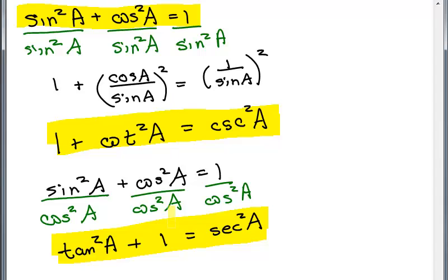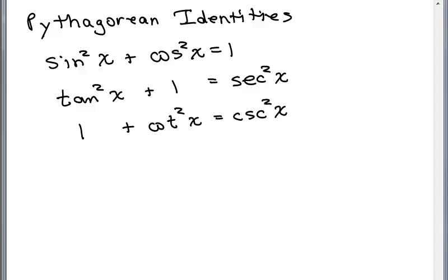The three Pythagorean identities are all derived from the main one. If you forget one of the others, take the main identity — sine squared X plus cosine squared X equals 1 — and divide by sine squared X to get the second, or divide by cosine squared X to get the third. Tangent and secant appear together in one equation; cotangent and cosecant appear in another. We commonly use the letter X instead of A when working with identities.